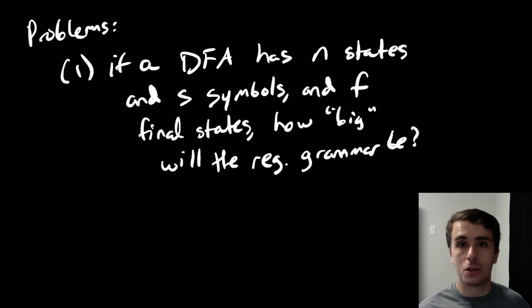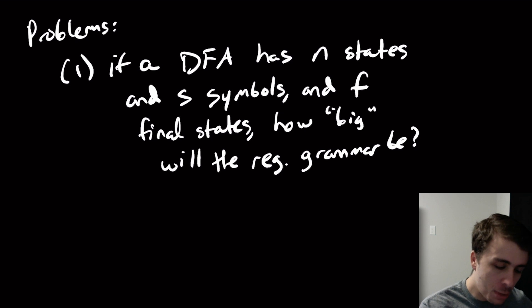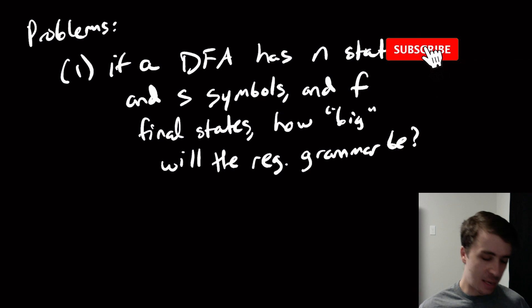Okay, so this is just a test to see do you understand the actual transformation here. It actually might be that we don't know exactly the answer for this because maybe we need to know something about the DFA in order to assert how big the regular grammar is. And by big I mean how many variables does it have, how many terminals does it have, how many rules does it have, that sort of thing.